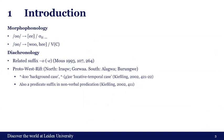There is a related suffix in Iraku, 'o', which has an allomorph 'a'. Keisling also reconstructs it for Proto-West Rift, from which Iraku, Gorwa, Alagwa, and Burunge have arisen — specifically 'ko', a background case marker, and 'ge' or 'e', a locative-temporal case marker. He also notes there is a predicate suffix in non-verbal predication with this form.